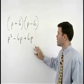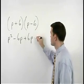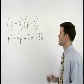Plus the product of the last terms, positive 6 times negative 6, which is negative 36.